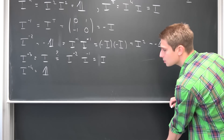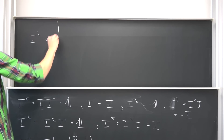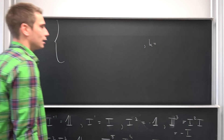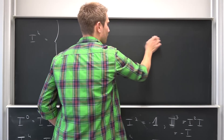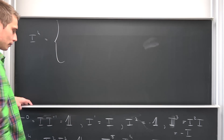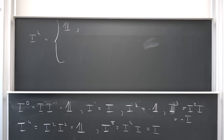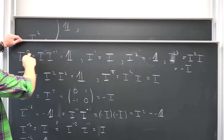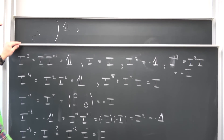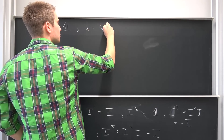Now we can basically turn this into some nice notation. What is i to the kth power? We are going to put this into casework. When are we going to end up with the identity matrix? This is under the condition that k equals 0, then 4, then 8, or for example negative 4. How can we put this into nice notation? This is nothing other than k being equal to 4 times n, where n is an element of the integers.